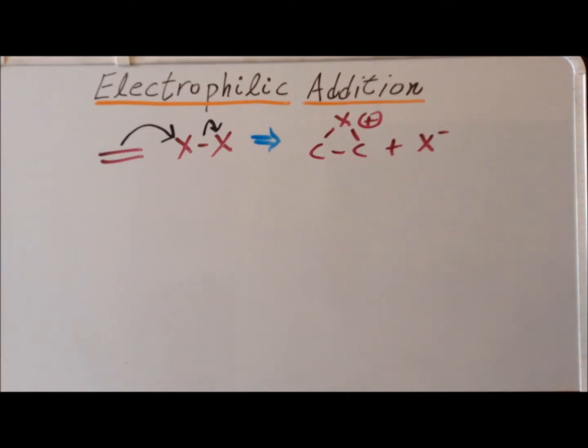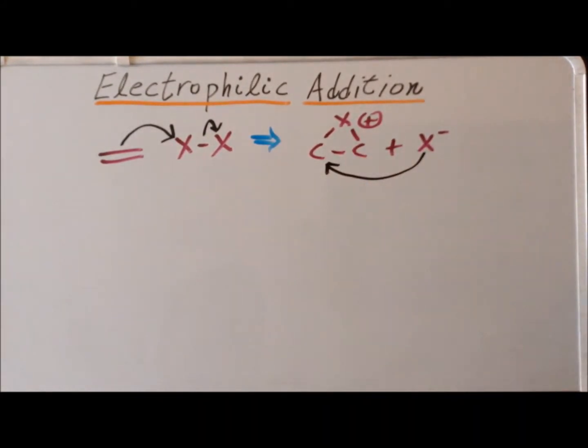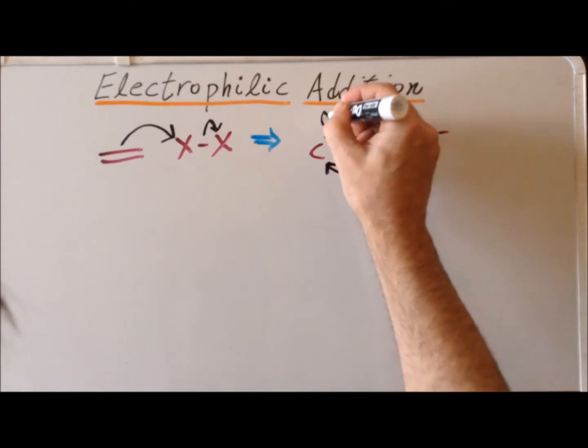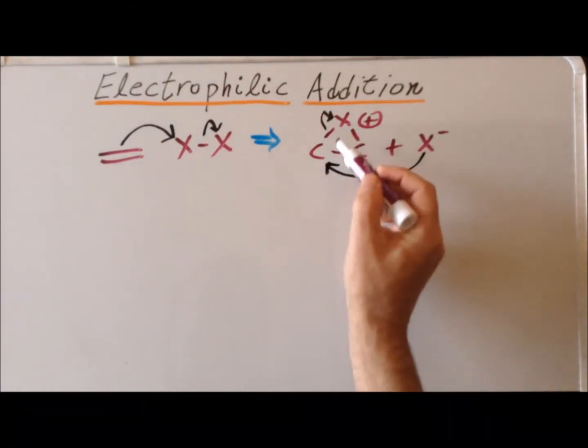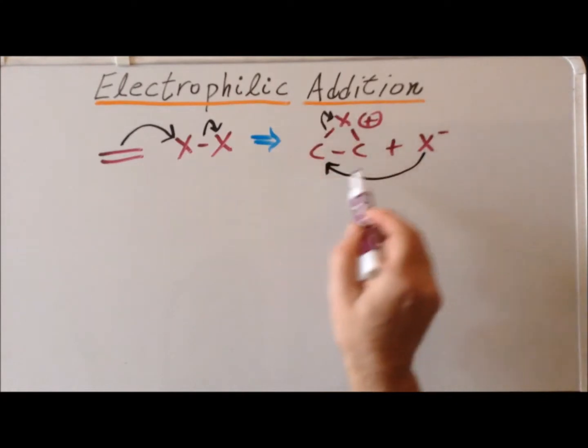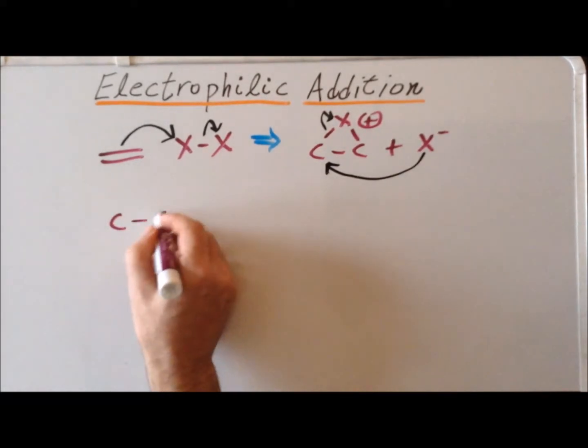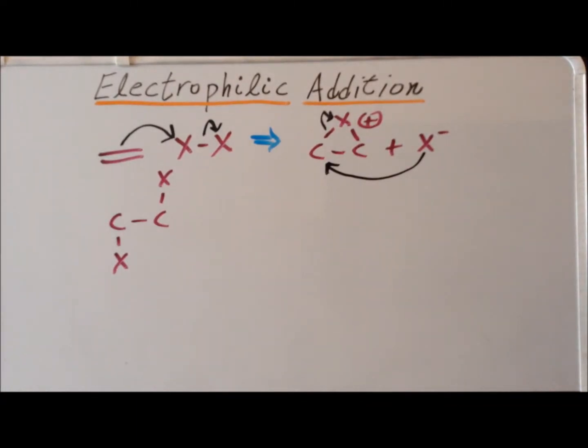The next step involves attack of the halide on electron-deficient carbon and then cleavage of one of the carbon-halogen bonds. The result of this, notice that this is anti-attack because it's coming from the opposite side of the halogen that is currently in the cyclic structure there. And the result that we get is going to be a vicinal dihalide, where we have halogens attached to carbon atoms that are neighbors, that are adjacent to each other.